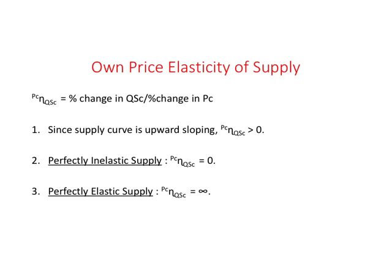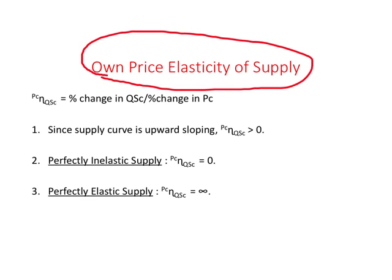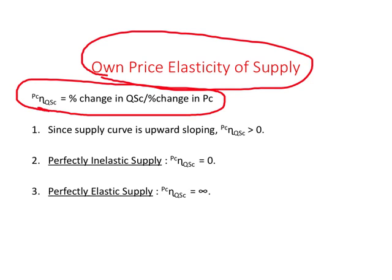The only elasticity we look at on the supply side is own price elasticity of supply. This measures by how much percent does quantity supplied of coffee change when the price of coffee increases by one percent. In terms of a ratio, it is percent change in quantity supplied divided by percent change in price per cup of coffee.